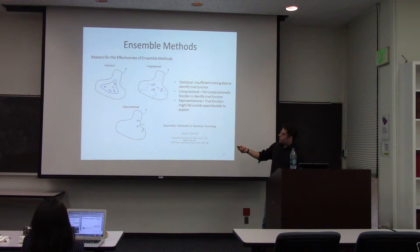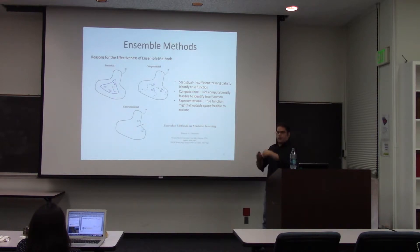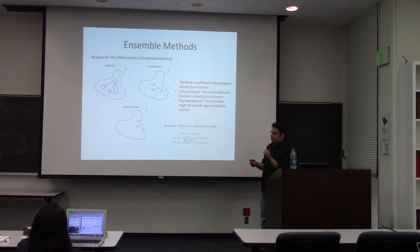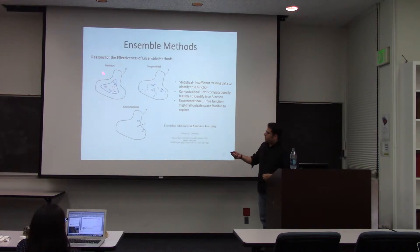Dietrich made three arguments for why ensemble methods are useful: statistical, computational, and representational. The statistical argument: if H is the space of possible predictors and F is the true function, with limited training data you learn different hypotheses — each related to F but not exactly F. When you average them, you get closer to F by averaging away variation. The computational argument: even with sufficient data, it may be computationally infeasible (NP-hard in general) to find the true function, leading to different local maxima; averaging these gets closer to the true function.